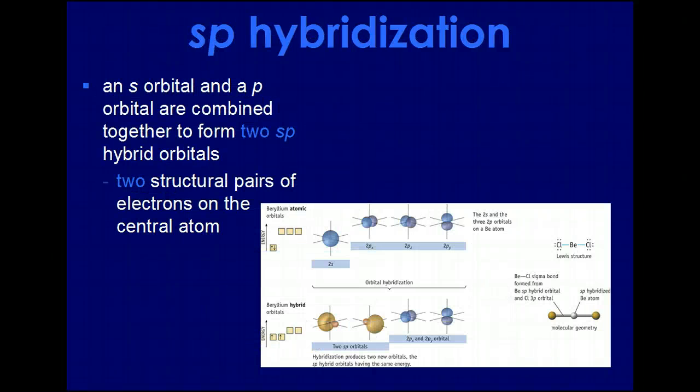With sp hybridization, we just have one of the p orbitals along with the s, and the other two p orbitals would be used to handle a multiple bond, or it'll just be a molecule that is stable with two pairs of electrons.